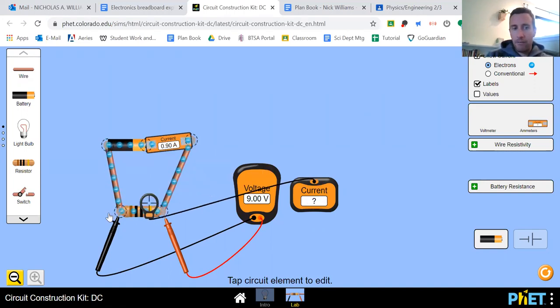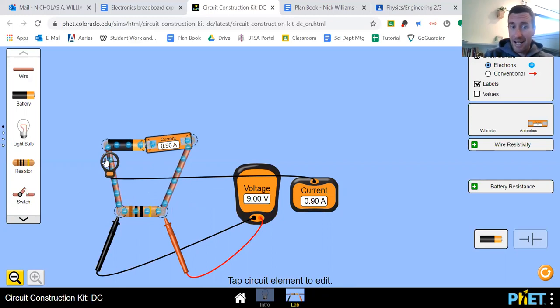It's 0.9 amps. And if I put it over on this corner, it's 0.9 amps. And if I put it over here, it's 0.9 amps. The current is the same through the entire circuit.